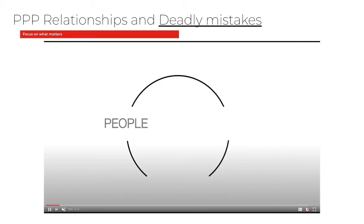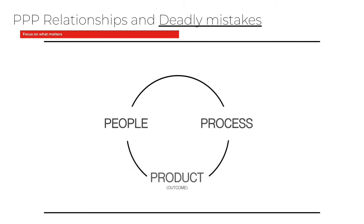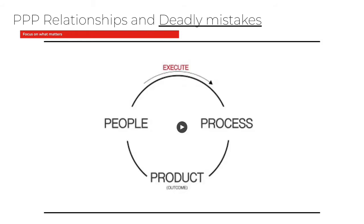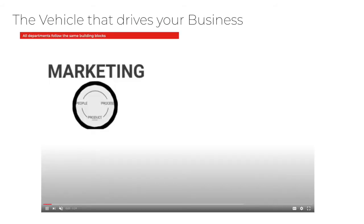Understanding the relationship between people, process, and product: people execute a process to produce a product. That gives you a list of tasks to execute, but you can't focus there and forget — people are responsible for the product. The only way you have a good product is having metrics that measure what you produce. Far too many people focus on the tasks and not the KPIs to know that you're actually pushing the business forward.